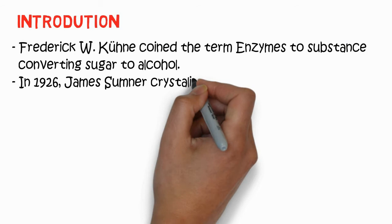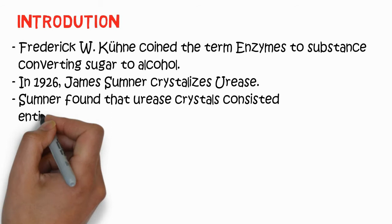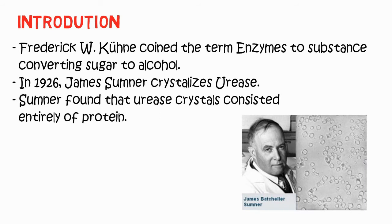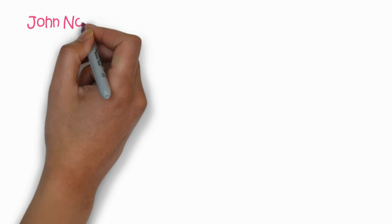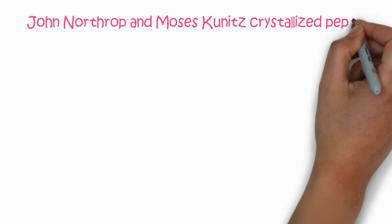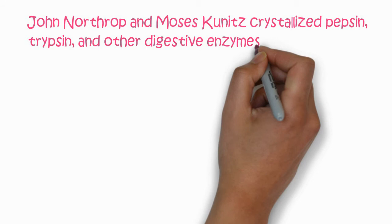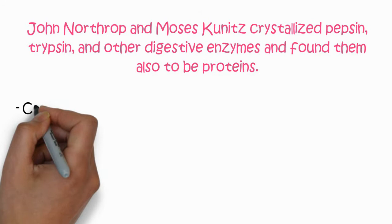A brief history: Frederick W. Kühne coined the term 'enzyme' to describe the substance converting sugar to alcohol. Then in 1926, James Sumner crystallized urease and found that the urease crystal consists entirely of protein. Here you can see the crystal of urease and the picture of James Sumner. He postulated that all enzymes are protein in nature.